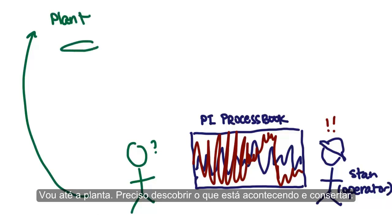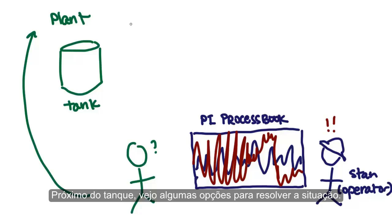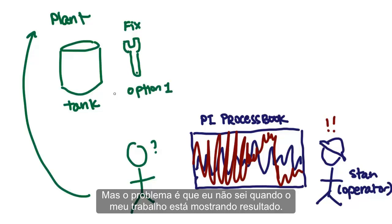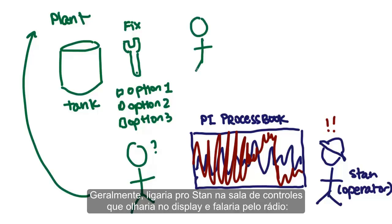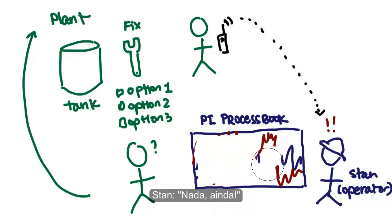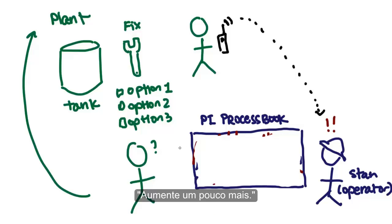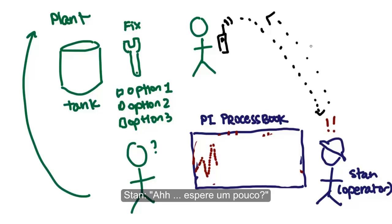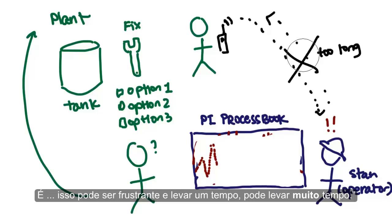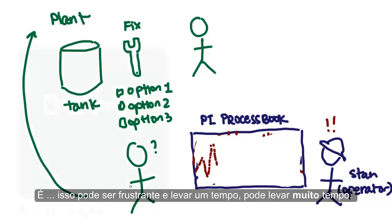I head out to the plant to figure out what's going on and fix it. Standing next to the tank, I see a few different options for how to approach the problem. The tough part is, I don't really know when exactly my work is getting results. Usually I'd call Stan back in the control room looking at the display and go back and forth over the radio: 'How's it looking now?' 'Nothing yet.' 'Turn it up a bit more.' 'Okay, how about now?' 'Wait for it.' It can be frustrating, and it can take a long time.